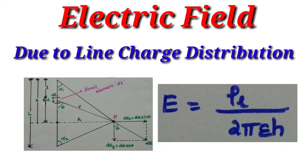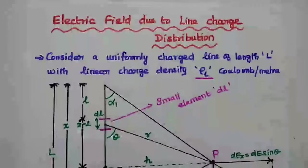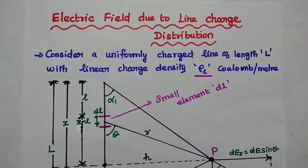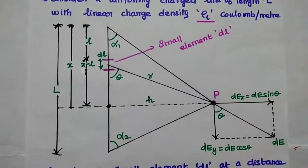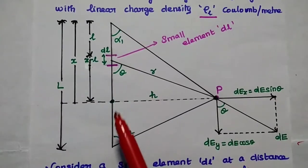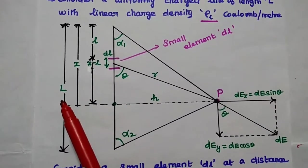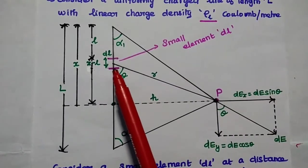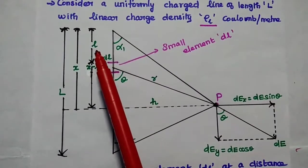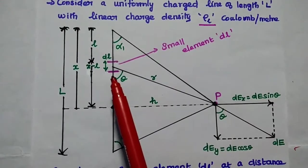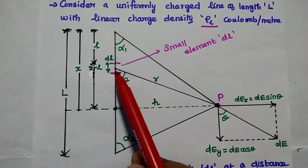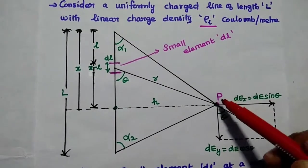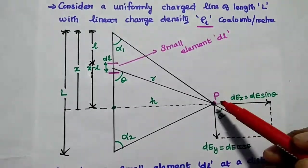Dear students, now we are going to discuss electric field due to line charge distribution over an infinite line. Consider a uniformly charged line of length L with linear charge density ρL. We take a uniformly charged line with length L and consider a small element dl at a distance L from one end. We consider the point P at a distance R from this small element and analyze the electric field at this point.